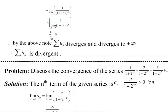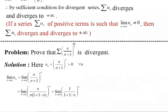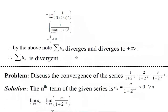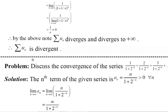Since e is between 2 and 3, 1/e cannot be 0. Therefore, by the above sufficient condition for divergence discussed in the previous problem, the series Σ(n/(n+1))^n, being a series of positive terms with limit of u_n not equal to 0, diverges to plus infinity. Therefore, the given series is divergent.